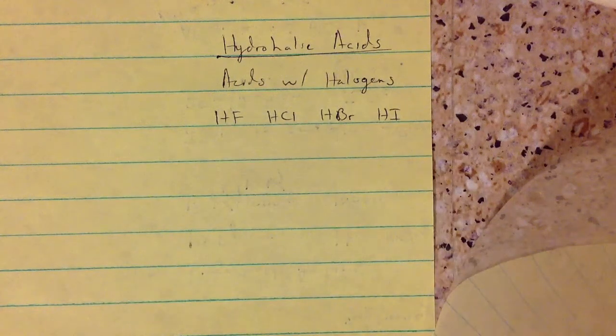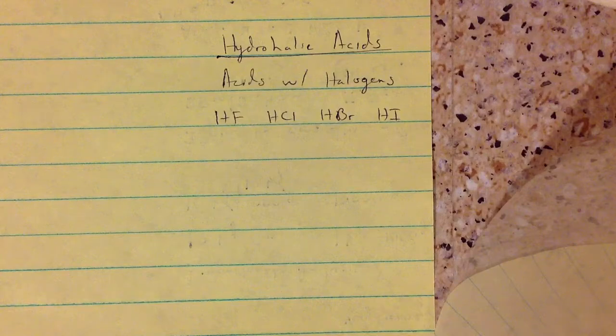The hydrohalic acids are just acids with halogens, and they're HF, HCl, HBr, and HI.